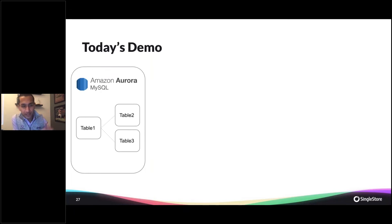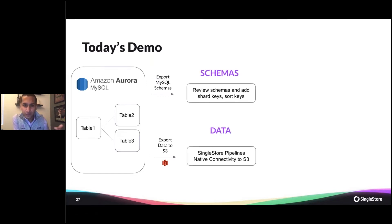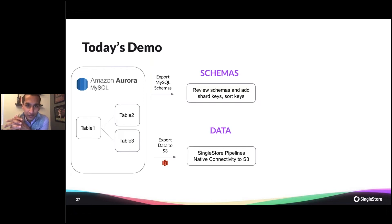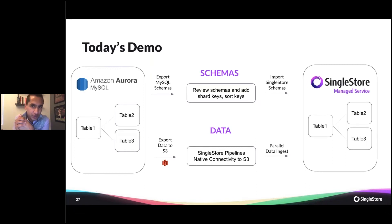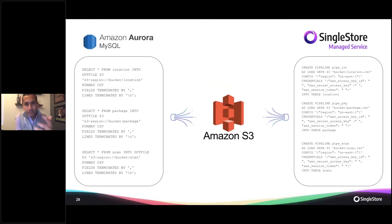For today's demo, we'll start with Aurora MySQL with a few different tables, then export those schemas on their own and export the data separately — two separate paths. The data will go to S3, where we'll review the schemas and add shard keys and sort keys specific to distributed database systems. Then we'll take that data, export it into S3, and pipe it into SingleStore with a simple SQL command.